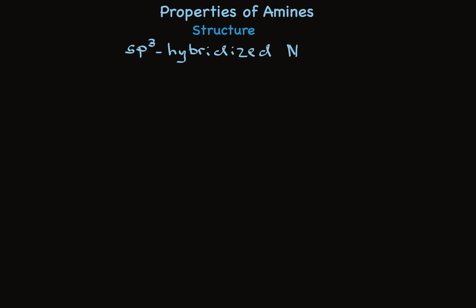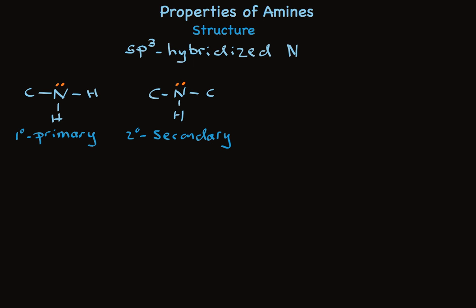First, let's look at amines that have SP3 hybridized nitrogen. Compounds that only have one alkyl group attached to nitrogen are called primary amines. If they have two alkyl groups attached, they're called secondary amines. And if they have three alkyl groups attached, they're called tertiary amines.